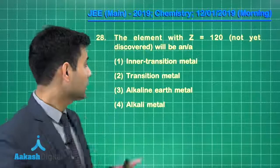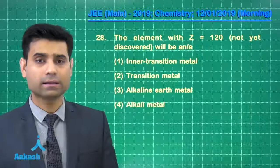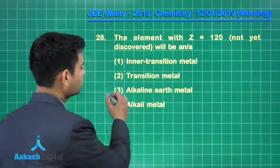So the element with Z equals 120 will be an alkaline earth metal. Hence the correct answer for this question will be option 3.